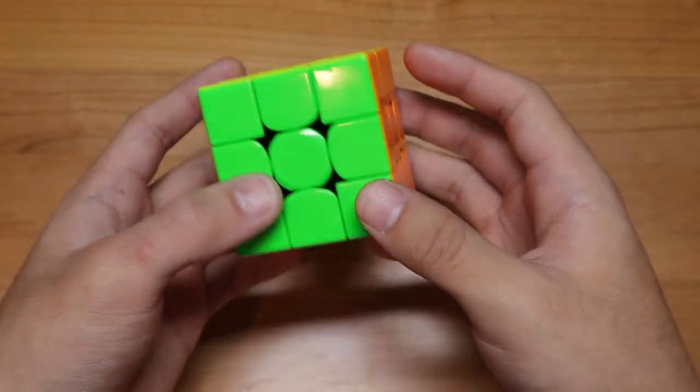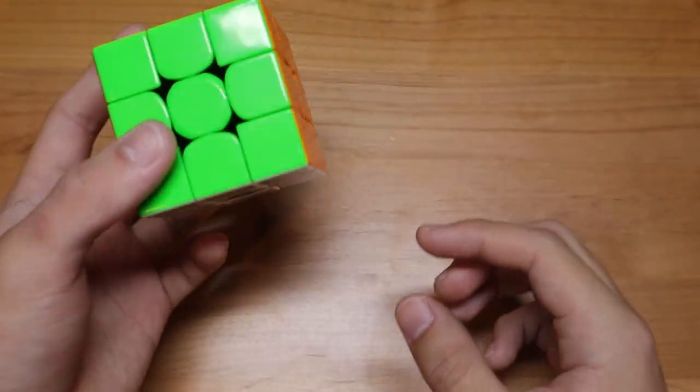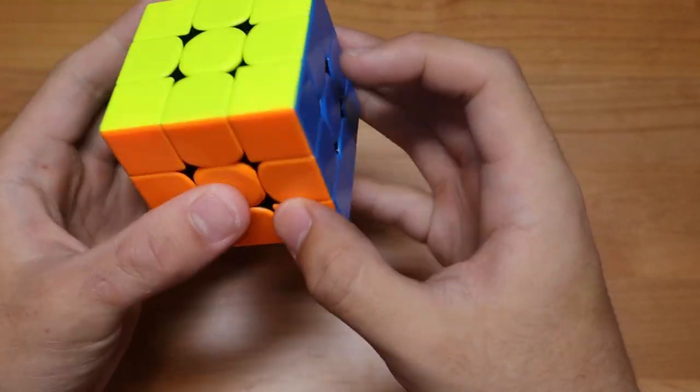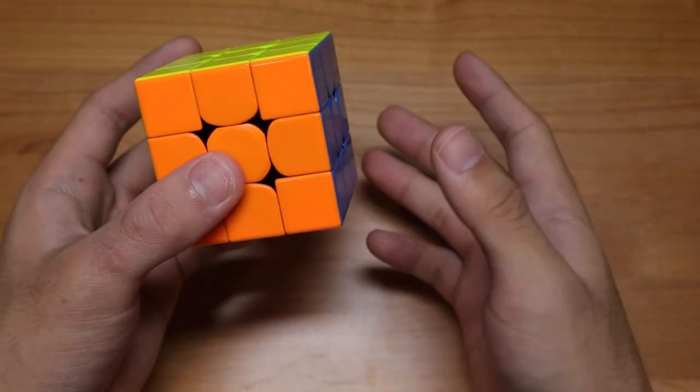But to have an insanely good look ahead like Timon, you need to be able to complete this in three steps: Cross plus two, two F2L pairs plus OLL, and then PLL.